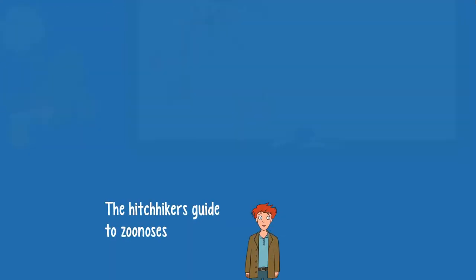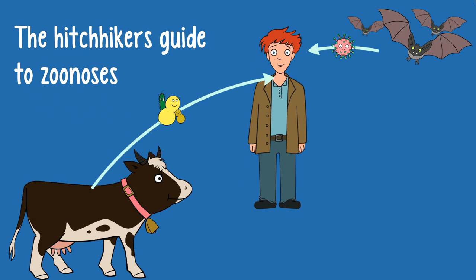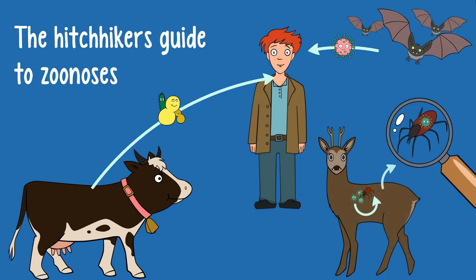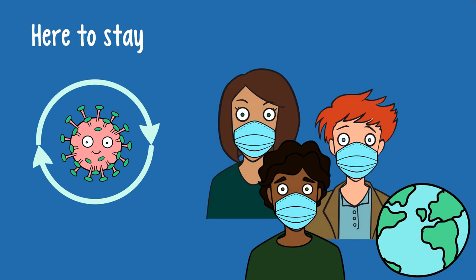Zoonotic pathogens can latch onto us from an animal directly, or they can hitchhike using an intermediate host — for example, mosquitoes that carry pathogens from one animal to another. And it's not like the animals themselves need to get a fever from it; that might just be us. If worst comes to worst, zoonotic pathogens cause recurring outbreaks like the Ebola virus, or lead to global pandemics.